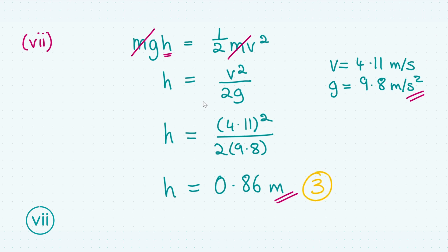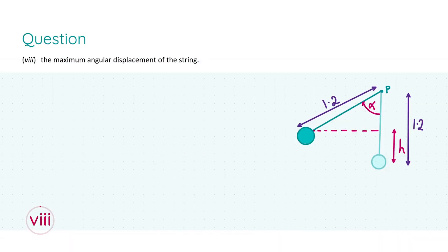For part eight we are asked to find the maximum angular displacement of the string. Maximum angular displacement corresponds to when the bob is at its maximum height, as you can see in the diagram on the right. This is why it's important to draw your diagrams, especially for mechanics, because it can really help you to visualize the physical scenario. Really this is all about trigonometry now. We have a target variable which I'm going to label as alpha. This corresponds to when the bob is at maximum height. We have information for the hypotenuse, H = 1.2 meters, and the adjacent, which is the difference between the height h at maximum height and the length of the rope.